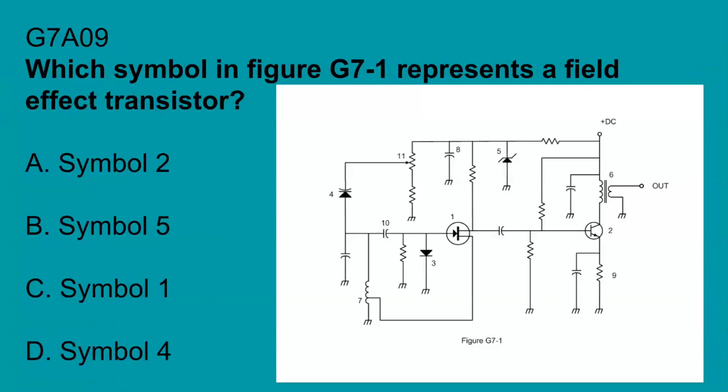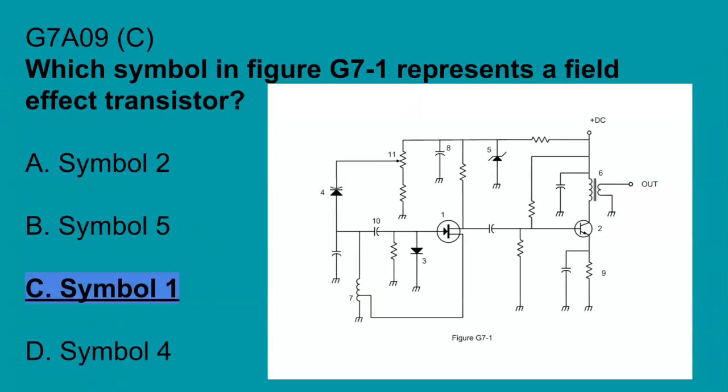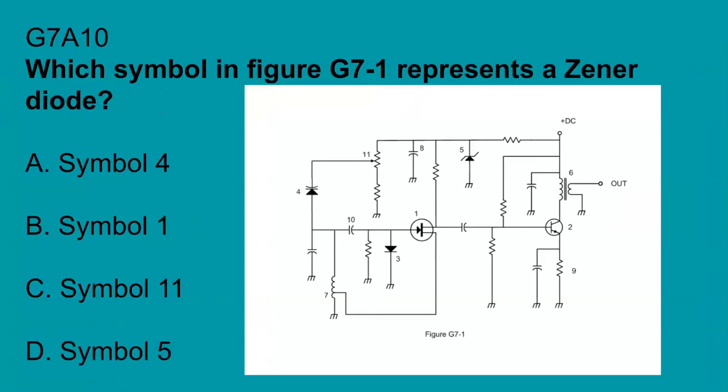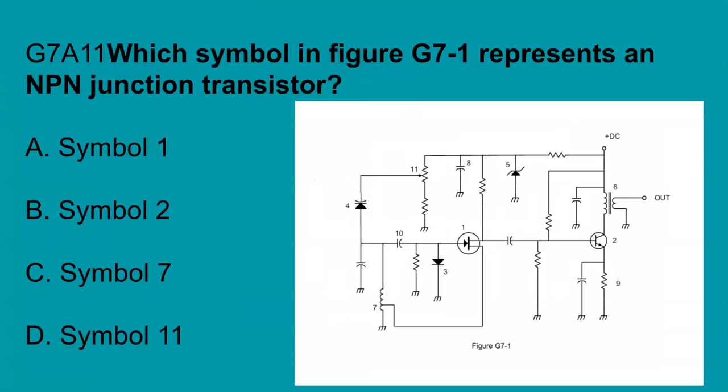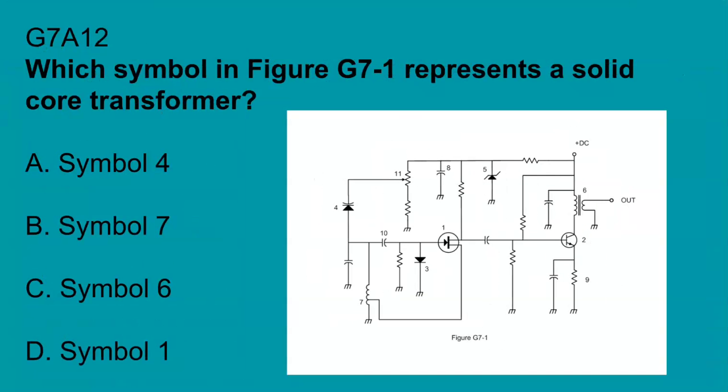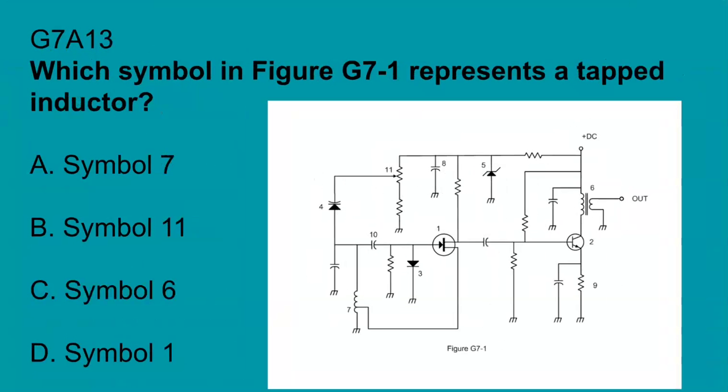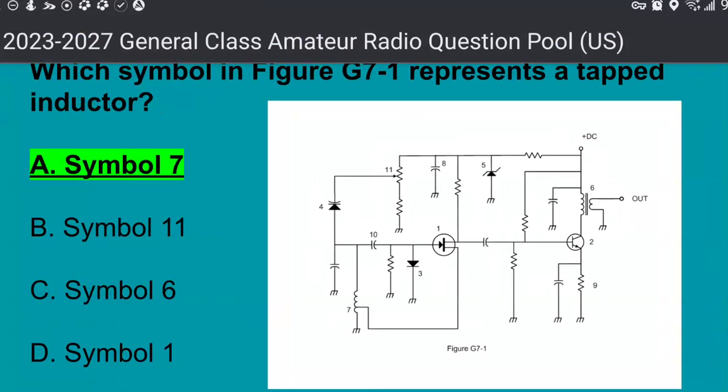G7A09, which symbol in figure G7-1 represents a field-effect transistor? Symbol 1. G7A11, which symbol in figure G7-1 represents an NPN junction transistor? Symbol 2. G7A12, which symbol in figure G7-1 represents a solid core transformer? The answer is symbol 6. G7A13, which symbol in figure G7-1 represents a tapped inductor? Symbol 7.